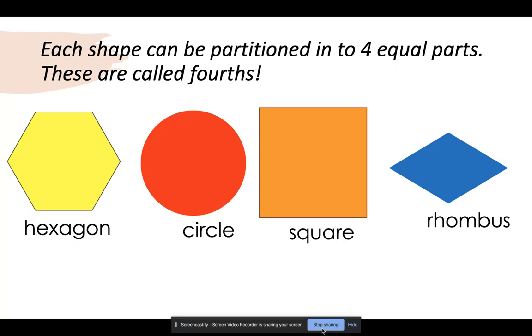For example, our first shape is a hexagon. Our hexagon now is a whole. But now that I cut it, it's in fourths. It has four equal parts.